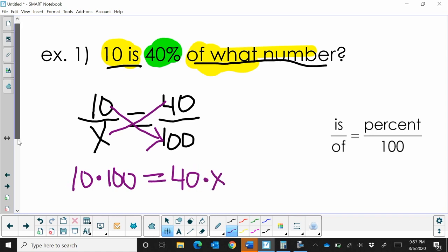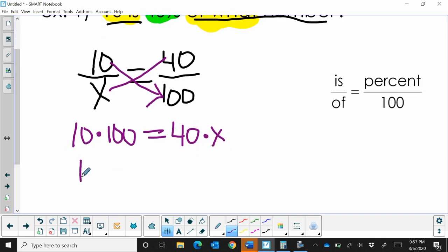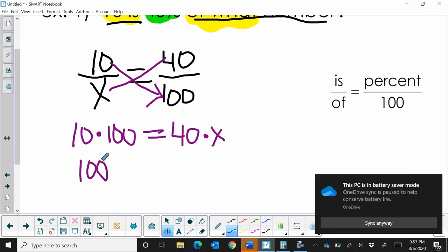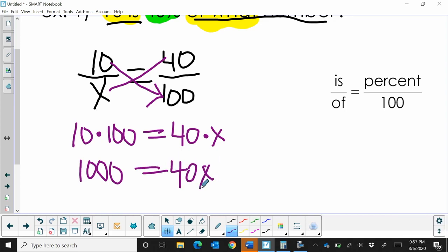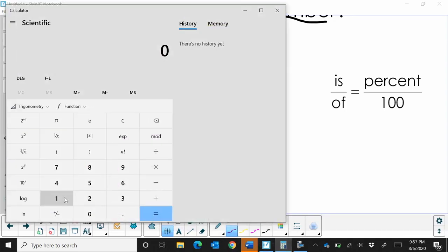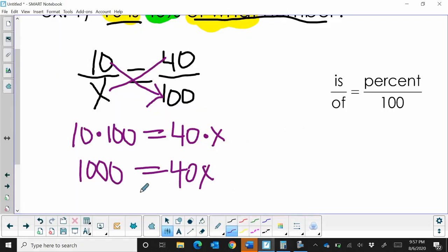So 10 times 100 is 1000, and 1000 is equal to 40x. So now I'm going to grab my calculator and take 1000 and divide it by 40, and that gives me 25. So that means x is 25.